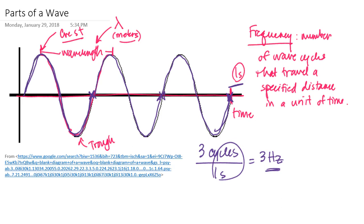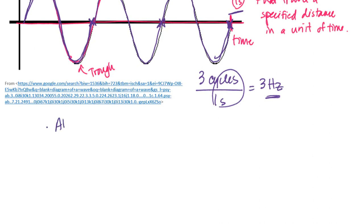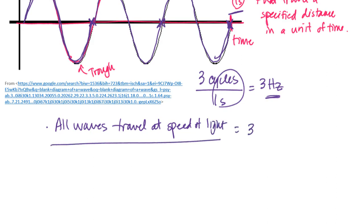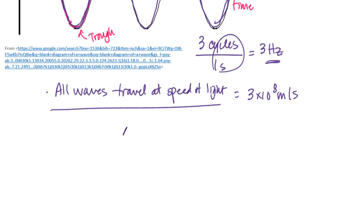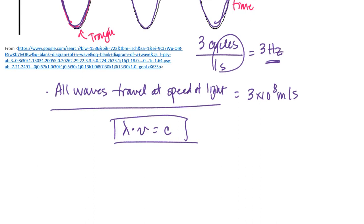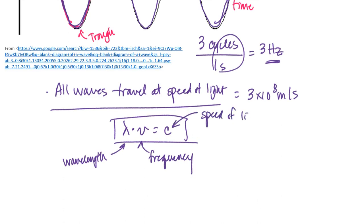As it turns out, wavelength and frequency are related to each other because all waves travel at the speed of light. The speed of light is 3 times 10 to the 8th meters per second. If I multiply the frequency times the wavelength, I will get the speed of light. This is one of those fundamental relationships that defines how frequency and wavelength relate to each other. The Greek letter lambda is the wavelength, the Greek letter nu (which looks like a script V) represents frequency, and C represents the speed of light.